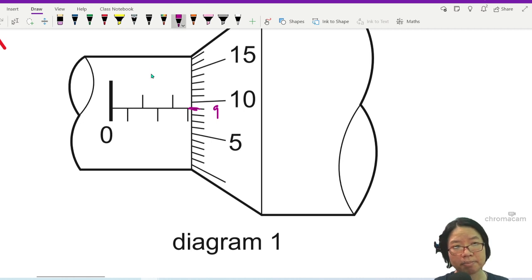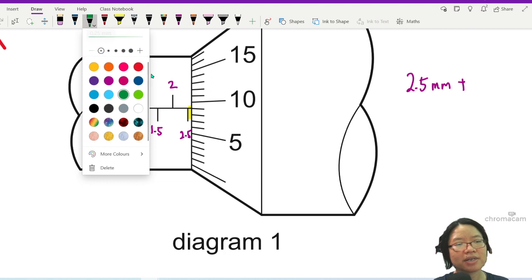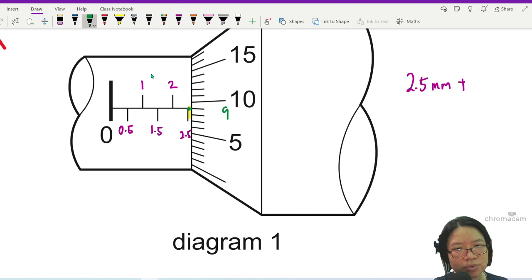Because each interval is 1 mm. So this is 1 mm, this is 2 mm. If you're wondering what is this, this is 0.5, this is 1.5, this is 2.5. So your reading is 2.5 mm plus a little bit more. You see this part here? This extra a bit more. So this extra a little bit more is your 9. This extra here to here. So again, just now we already know that one small interval is 0.01 mm. So this 9 is equivalent to 0.09 mm. So this is 2.5 mm plus 0.09.